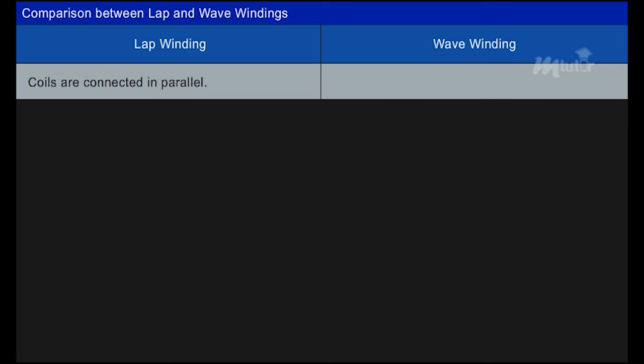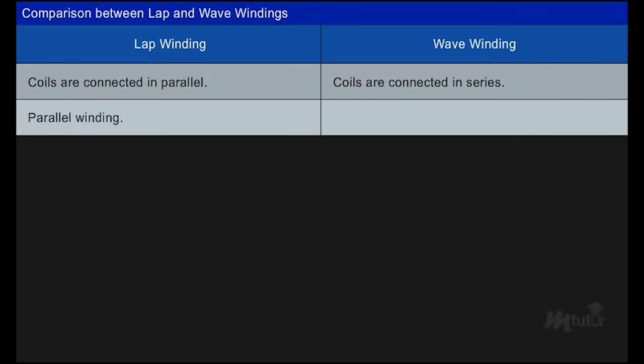Let us summarize with a comparison between lap and wave winding. In lap winding, all the coils generating EMF in the same direction are connected in parallel, whereas in wave winding, the coils carrying current in the same direction are connected in series. Hence lap winding is also known as parallel winding, whereas wave winding is called series winding.